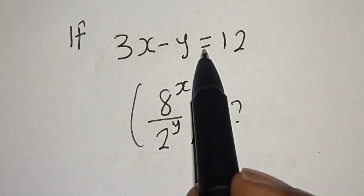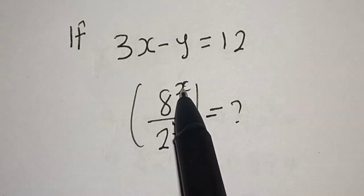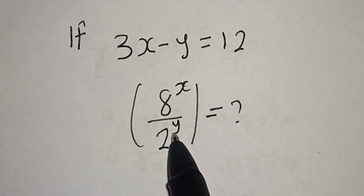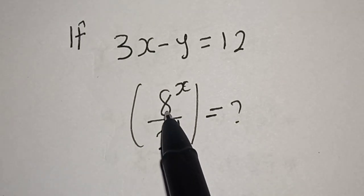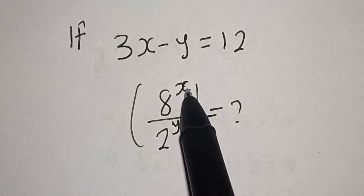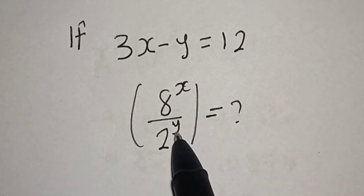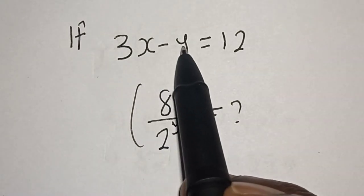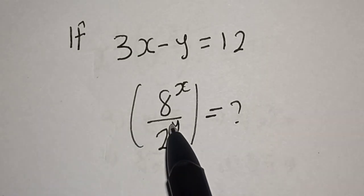If 3x minus y is equal to 12, what is the value of 8 raised to the power x over 2 raised to the power y? Hi everyone, welcome to my class. In this class we want to find the value of 8 raised to power x divided by 2 raised to power y, from this given equation 3x minus y is equal to 12.